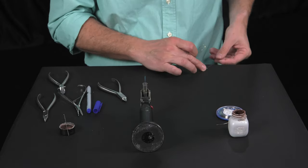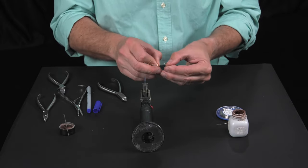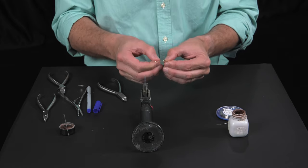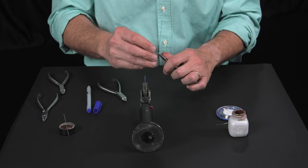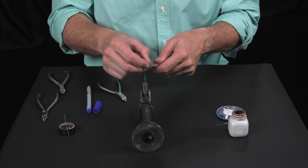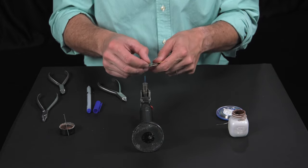It's very important now to stabilize the wire, and that the silver solder ball is placed exactly on the point where we want to perform the soldering.